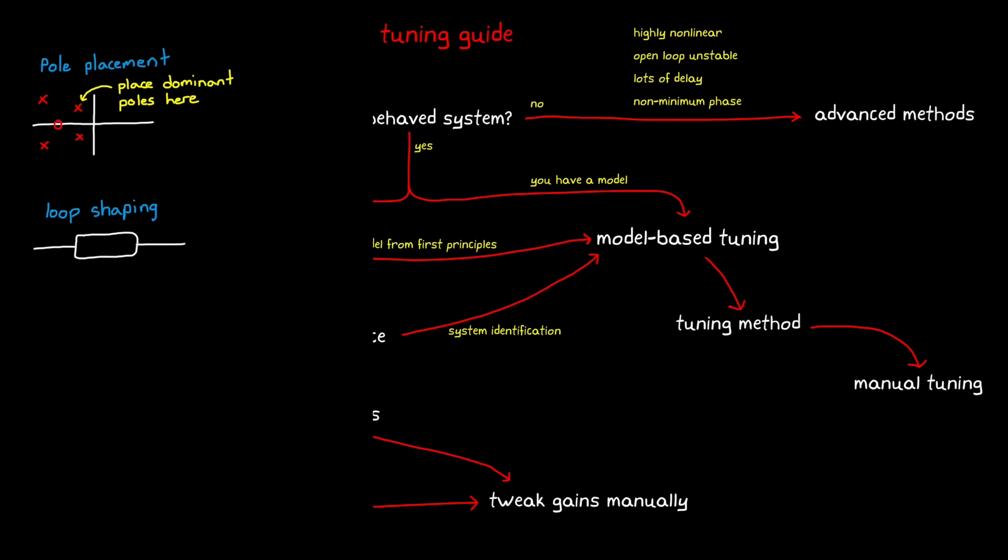Another method is to use the open-loop transfer function and our knowledge of things like Bode and Nyquist plots to shape the loop function so that our closed-loop system has the frequency or time-domain response that we need. This method requires that you understand how the open-loop system compares to the closed-loop behavior and how adjusting the two zeros of a PID controller affects that behavior.